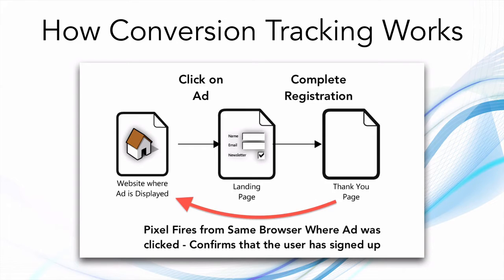In this image you can see there is a website where the ad is displayed, then you have the landing page, then the thank you page. This website could be a search engine running a search engine marketing ad, or a website where you are placing a display banner ad. Someone clicks the ad, goes to the landing page, completes registration, and then goes to the thank you page. When this happens in the same session using the same computer, internet connection, and IP address, the technology can track that this person came from a particular ad — and that is how conversion tracking works. This is called pixel firing technology: a one-pixel by one-pixel image that loads on the page, firing from the same browser where the ad was clicked, confirming the user has signed up.